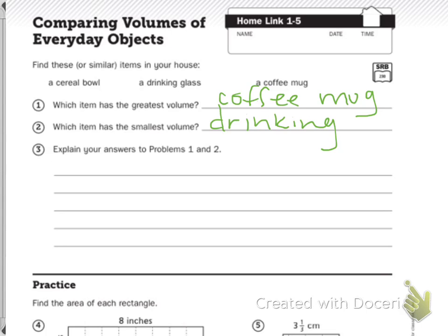And then it says explain your answers. So how do I know? I need you to describe how my coffee mug can fit my drinking glass inside it. That's why I think it has the greatest volume. It holds more liquid in it than the drinking glass.